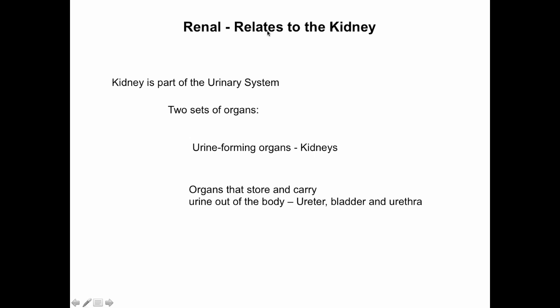The term 'renal' means related to the kidneys — so anything related to the kidneys is referred to as renal. The kidneys are part of the urinary system. There are really two sets of organs: the organs that form urine, which are the kidneys, and the organs that store and carry urine out of the body — the ureters, bladder, and urethra.